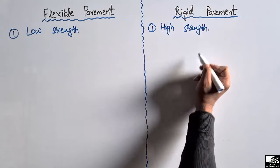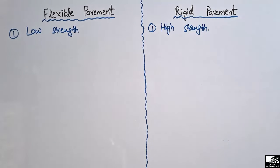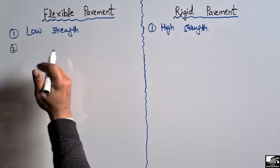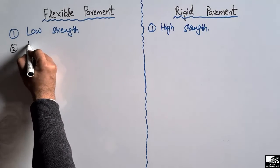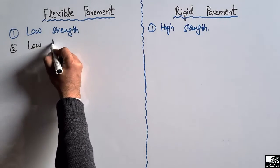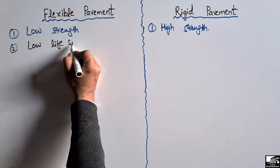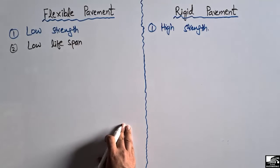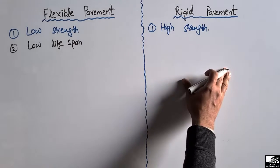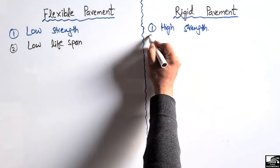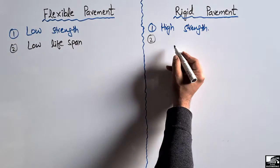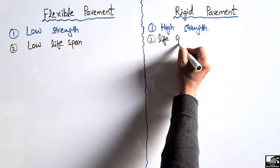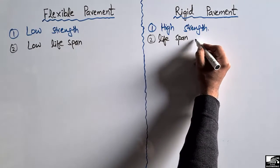The second difference is that flexible pavement has a low lifespan. The lifespan of flexible pavement is lower in comparison to that of rigid pavement, while rigid pavement has a longer lifespan.